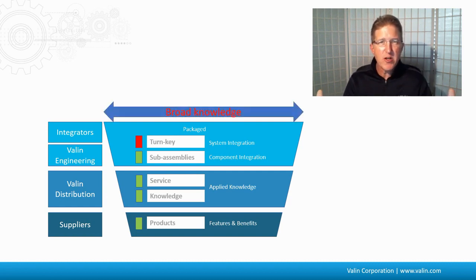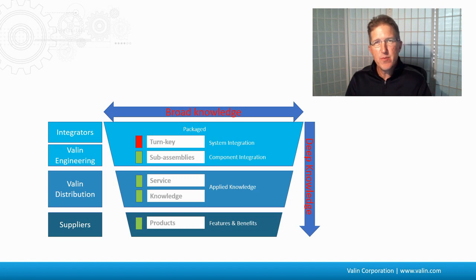The integrators really have broad knowledge that can take all this technology, all these different areas, and put it together. They each have their own specialties, but they have broader knowledge, whereas the product people—the suppliers—have deeper knowledge of their products. We distributors are somewhere in between. We have to have knowledge of multiple technologies and products, maybe not the whole system per se, but more than just the products themselves.